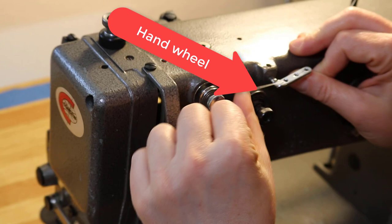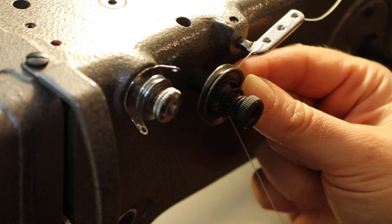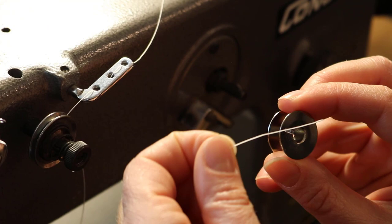We're going to put the thread into this tension disc set there. And then we're going to take a bobbin. And you want the thread coming out of one of these notches in the bobbin. So you bring the thread through so you have a nice long length of it to hold onto.